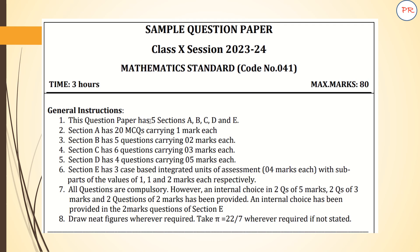Now, general instructions. This question paper has 5 sections divided into sections A, B, C, D, and E. Section A has 20 multiple choice questions carrying 1 mark each. Section B has 5 questions carrying 2 marks each. Section C has 6 questions carrying 3 marks each. Section D has 4 questions carrying 5 marks each. Section E has 3 case-based integrated units of assessment for 4 marks each, with sub-parts of 1, 1, and 2 marks each.